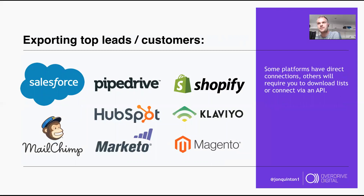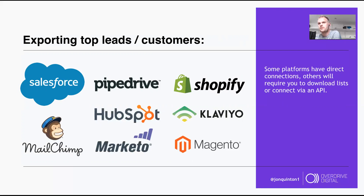Some platforms have direct connections — for example, Mailchimp has a direct connection with Facebook Ads so you can constantly feed your newsletter data straight into Facebook for audience creation. Otherwise you can download a CSV or create an API connection, depending on your development resources and how frequently you want to update audiences.